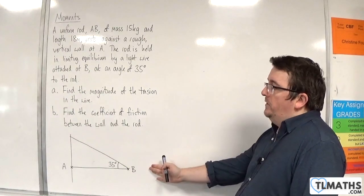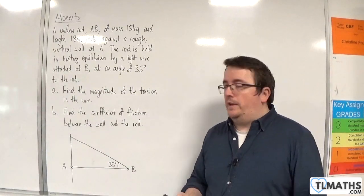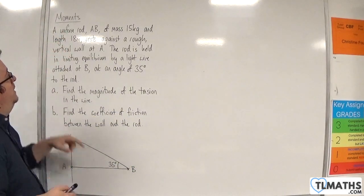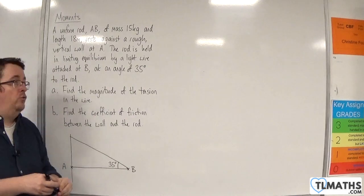Here is my diagram and I want to label it. First of all, it tells me that the rod is uniform, which means that its weight acts through the center.